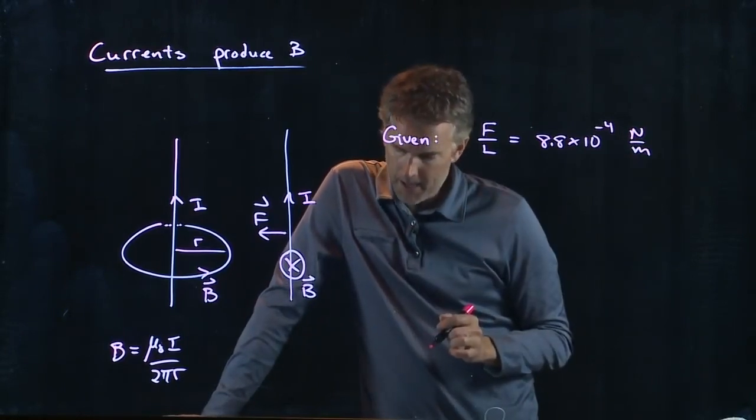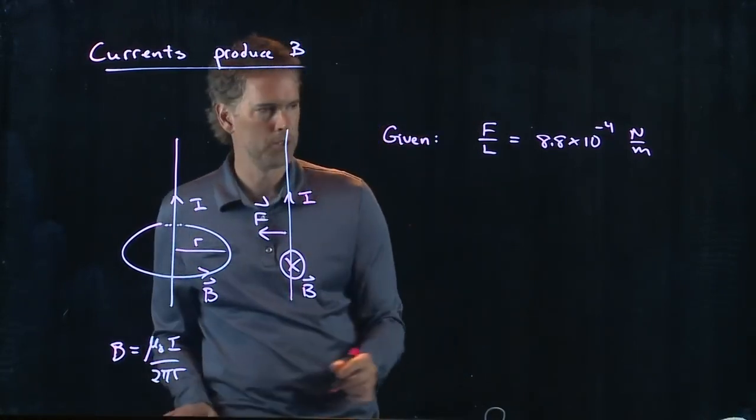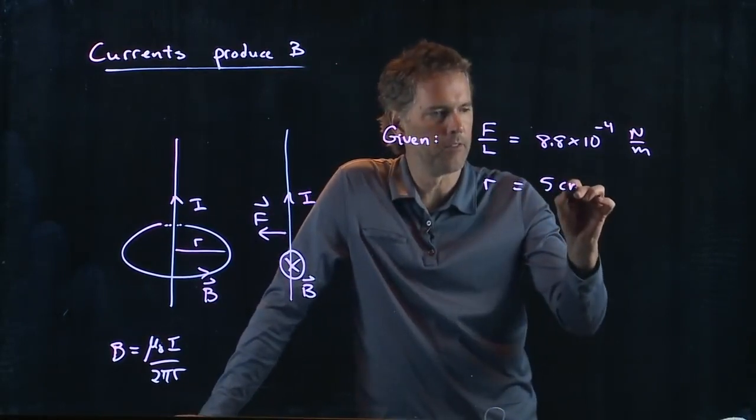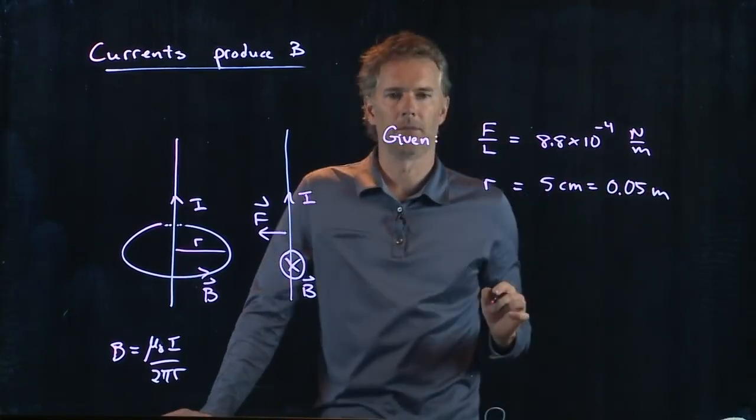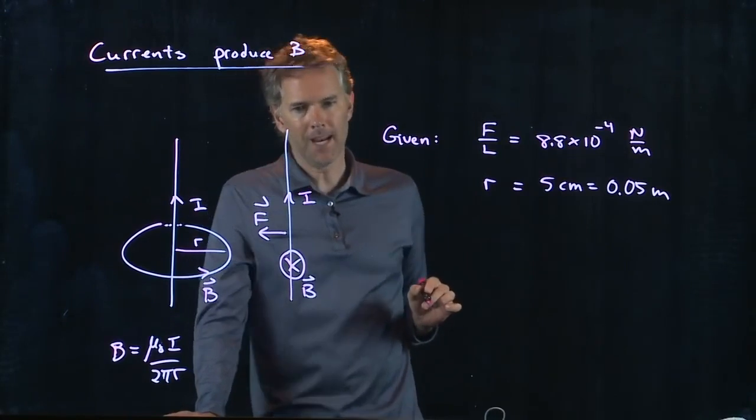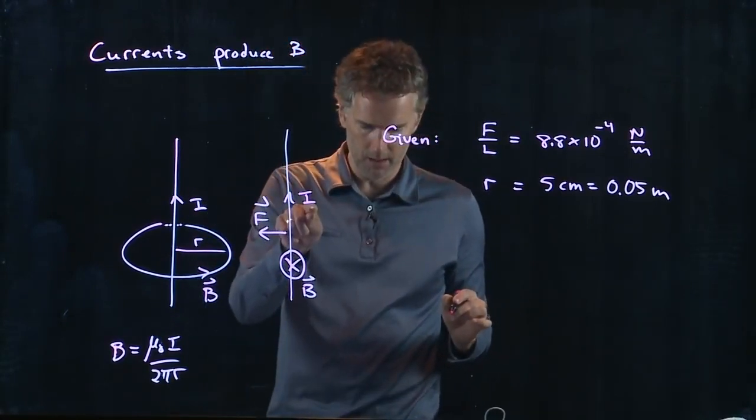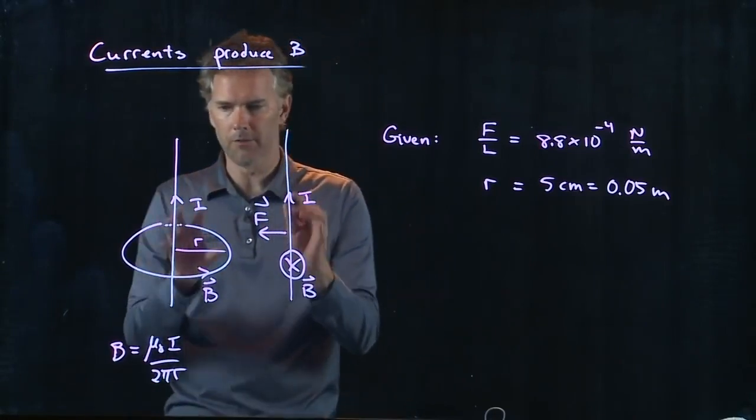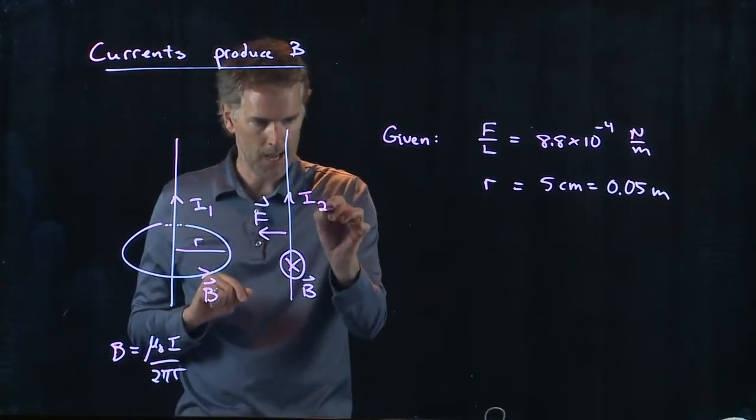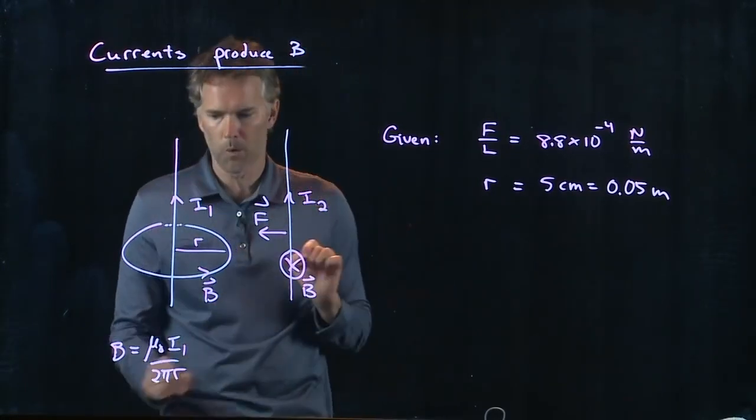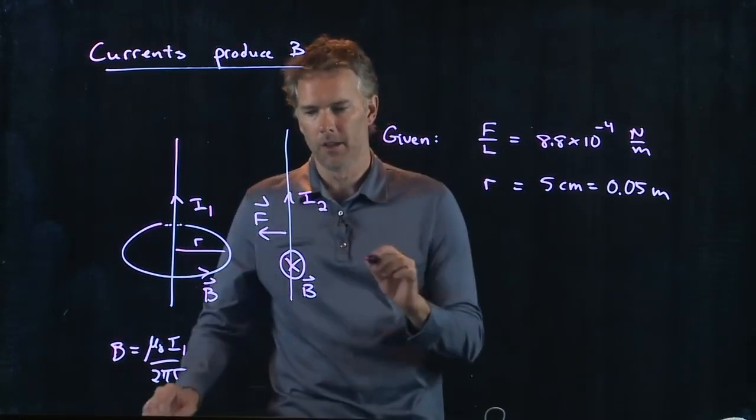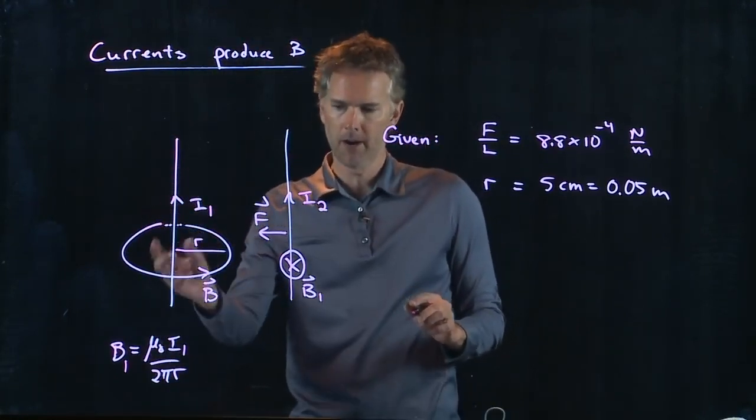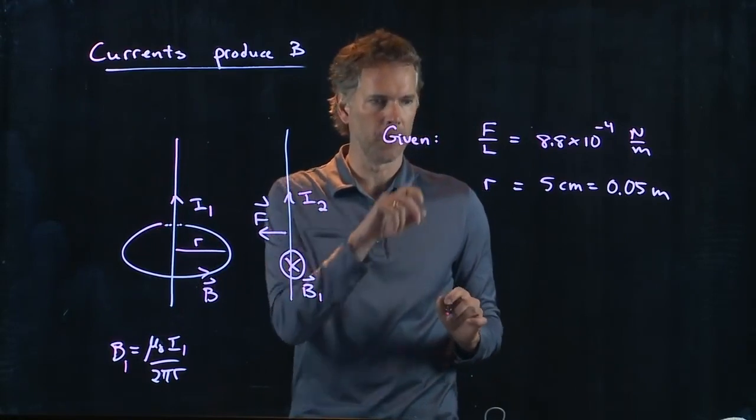And they also tell us that the distance between the wires, which is our R, is 5 centimeters, so 5 centimeters equals 0.05 meters. And we need to figure out what this current is in this wire. What's the magnitude of the current in the second wire? So to be clear, we better call these two different things. Let's call this one I1 and this one I2. And that means this down here is I1, and this B field here is B1. What is the B field due to the first wire at this location of the second wire?